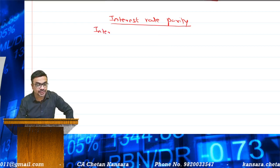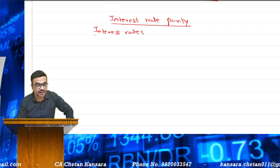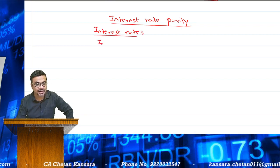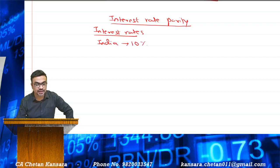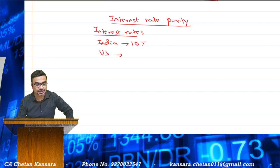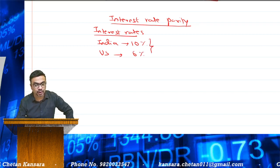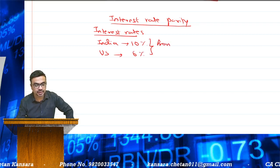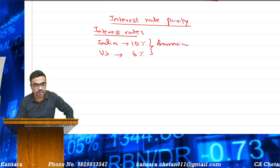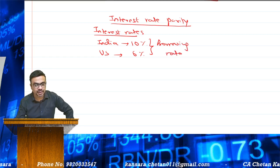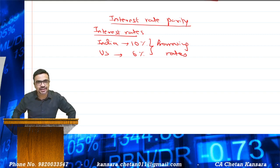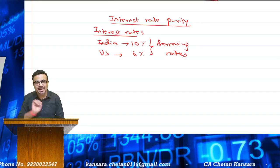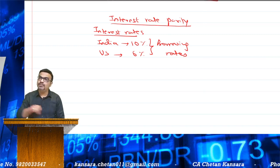Let us take one example. Suppose we take interest rates in India and US. Say the Indian interest rate is 10% and US is 6%. These are borrowing rates. Now, if borrowing in US is 6% and in India it is 10%, then why is not everyone borrowing from US?